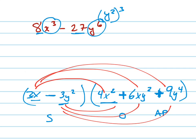So, we have 2 times 4, 2x times 4x squared is 8x cubed. That's how I got that one. Then I'm going to keep going on that line. That times that is 12x squared y squared. That times that is 18xy squared.